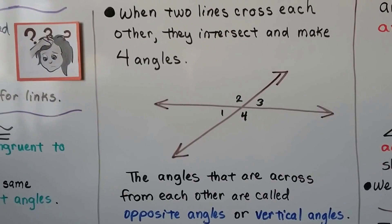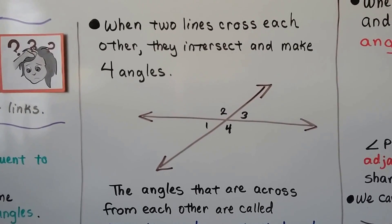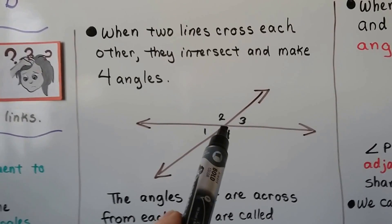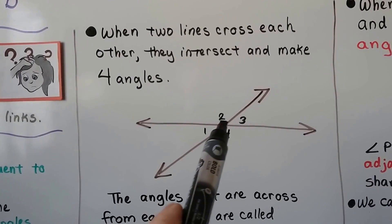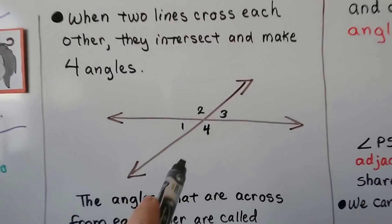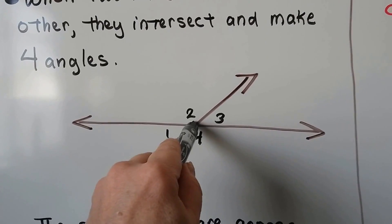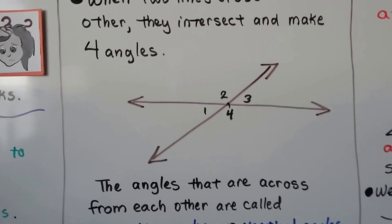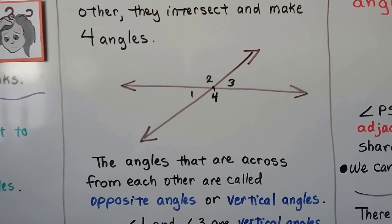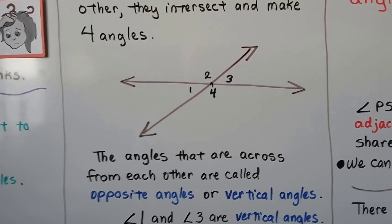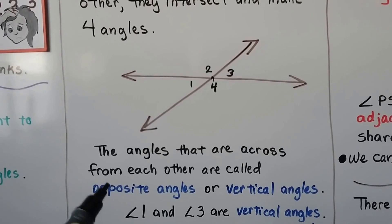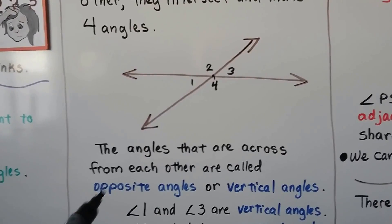When two lines cross each other, they intersect and make four angles. Here we have a line and here we have a line. Where they cross is their intersection right in the center — that would be the vertex for these angles. The angles that are across from each other are called opposite angles or vertical angles.